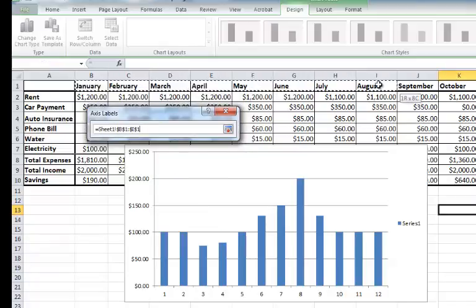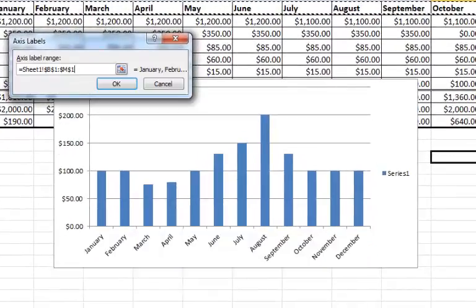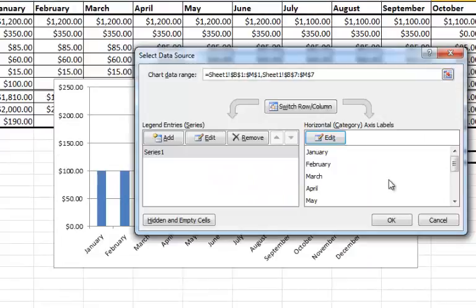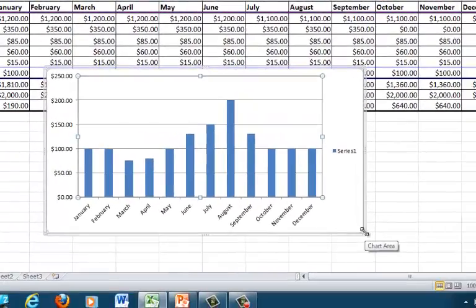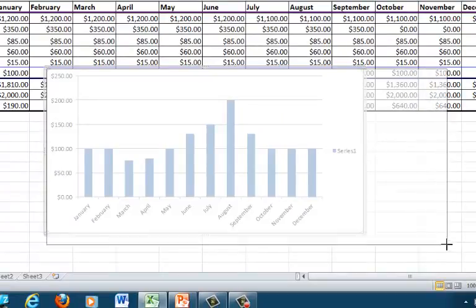So I'm going to highlight the months. So I press OK, then OK again, and now you see my Horizontal Axis features the months of the year.